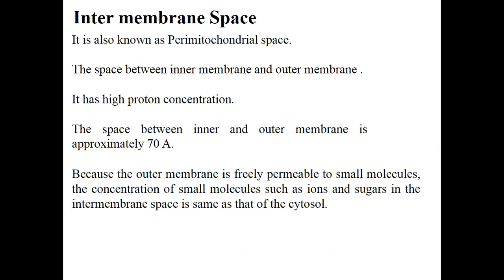After the outer membrane, we have the intermembrane space, also known as the perimtochondrial space. This is the space between the inner membrane and outer membrane. It has a high proton concentration, and the distance between the inner and outer membranes is approximately 70 angstroms.